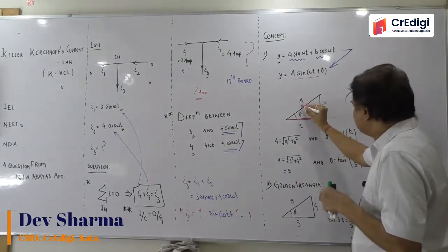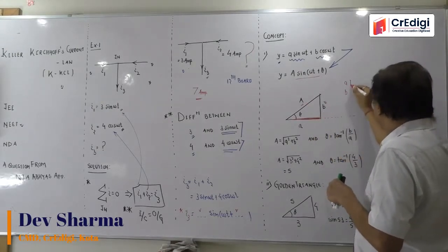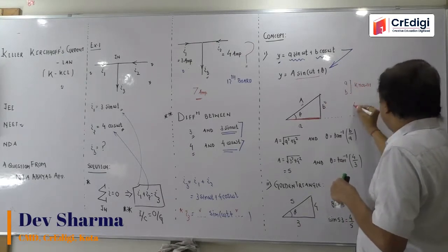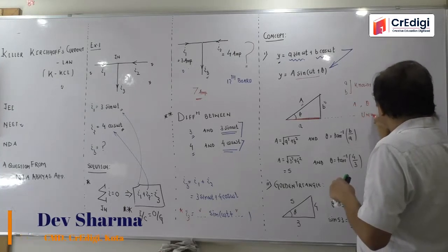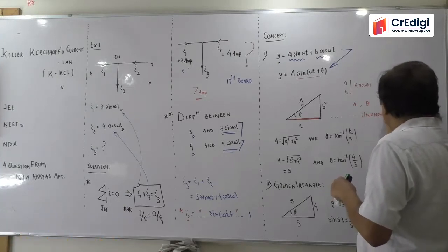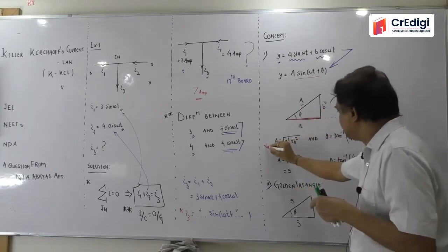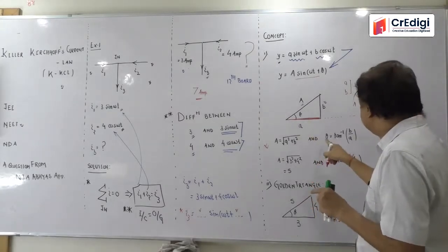This is A and B are known. A and B are known. And capital A and theta are unknown. Immediately you can see here.